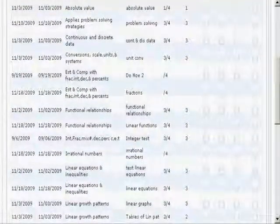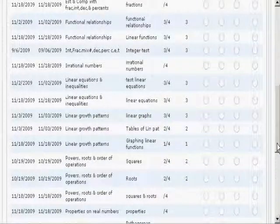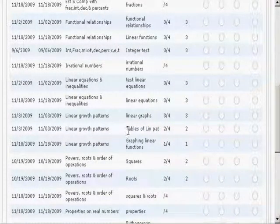Remember, 1 means not mastered, 2 means partially mastered, 3 means mastered, and 4 means advanced mastery. Here's a little chart.